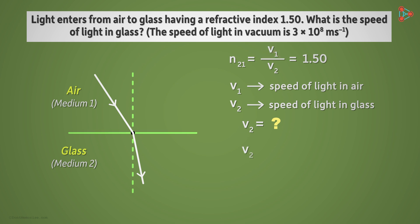We can write V2 as V1 over 1.5. The value of speed of light in air is very close to the value of speed of light in vacuum. Hence we can substitute this value in place of speed of light in air.